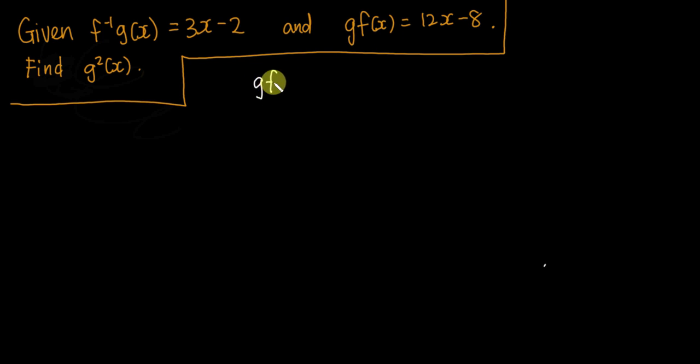So after you simplify, because f inverse and f—f inverse is the undo of f, something like that. So if I substitute the f inverse g into the g(x), what I will do is I will do the g∘f.